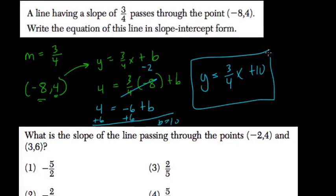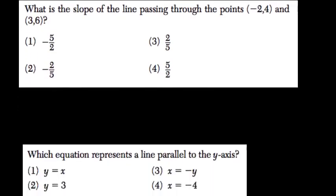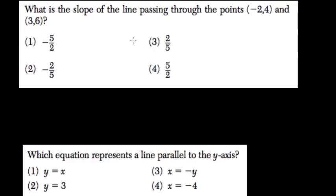What is the slope of the line passing through these points? Negative 2, 4 and 3, 6.